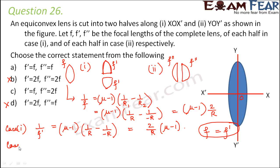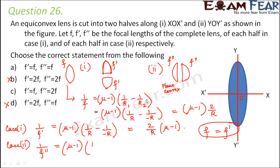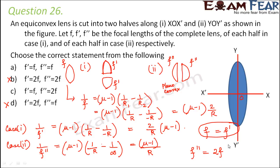Now for case 2, each half becomes a plano-convex lens. So 1/F'' = (μ−1)(1/R₁ − 1/R₂), where R₁ = R and R₂ = infinity for the plane surface. This gives (μ−1)/R. Therefore F'' = 2F. So the correct option is C.